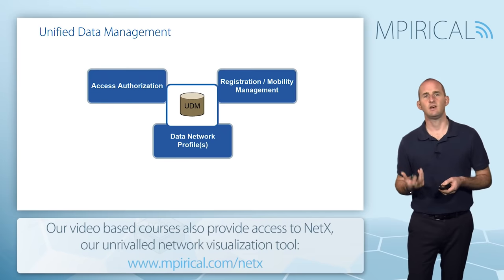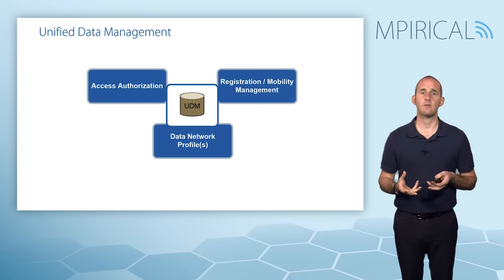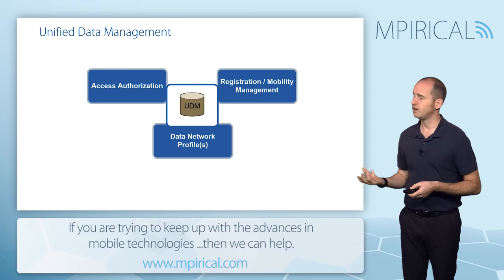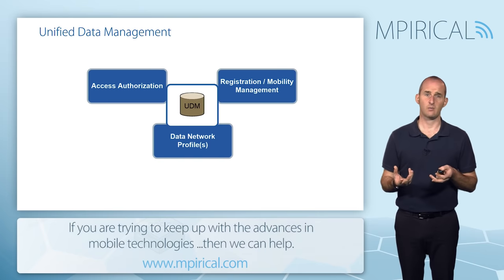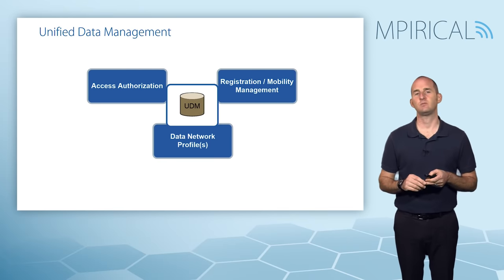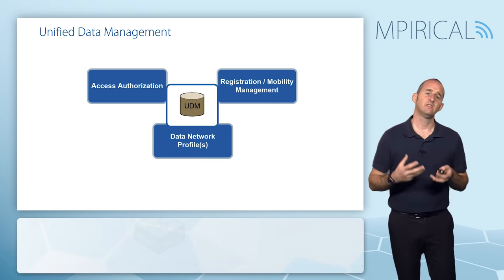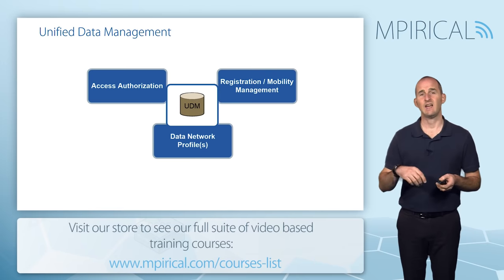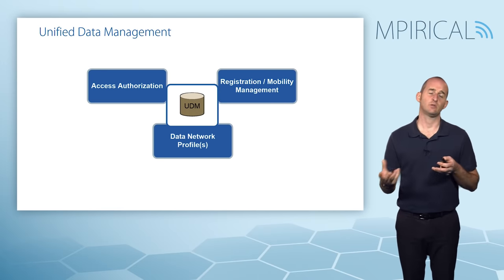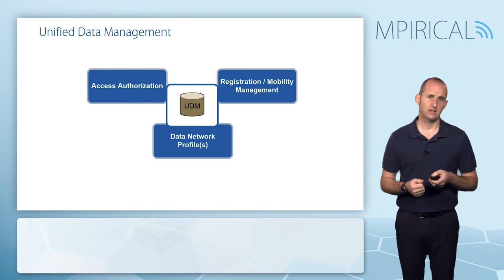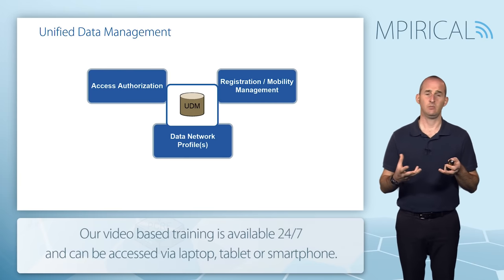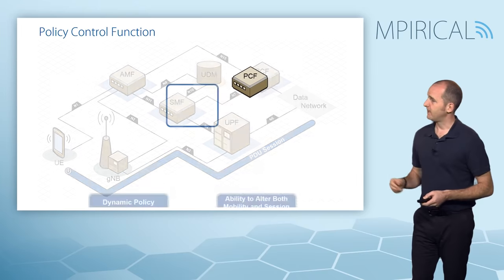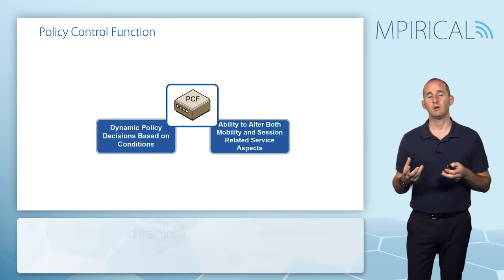The next element is the UDM — Unified Data Management. In effect it is a central repository of subscriber information. It is directly involved in access authorization as it holds security keys, and it is also involved in registration and mobility management by tracking which AMF a subscriber is allocated to. Finally, it contains the subscriber's data network profile, telling entities like the AMF and SMF exactly what the subscriber is and is not allowed to do, which data networks they can connect to, and what QoS profile they can expect.